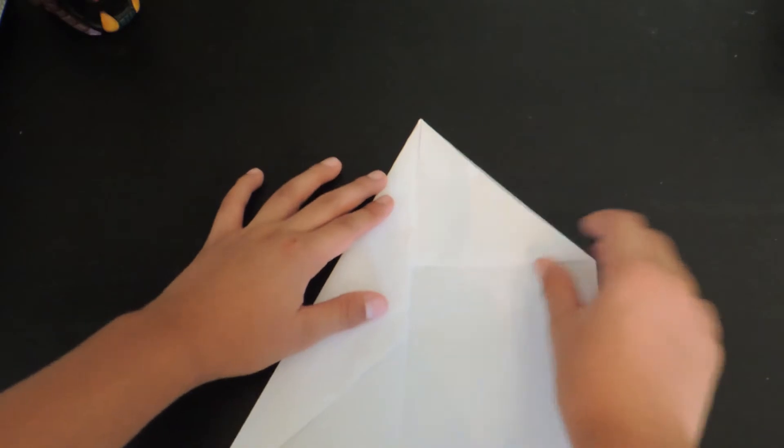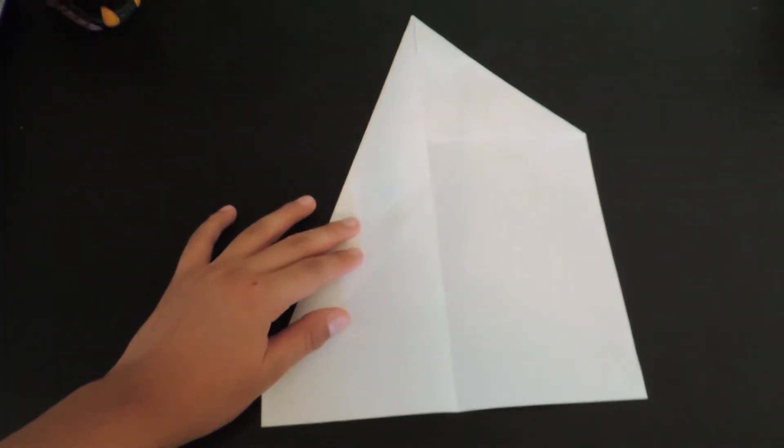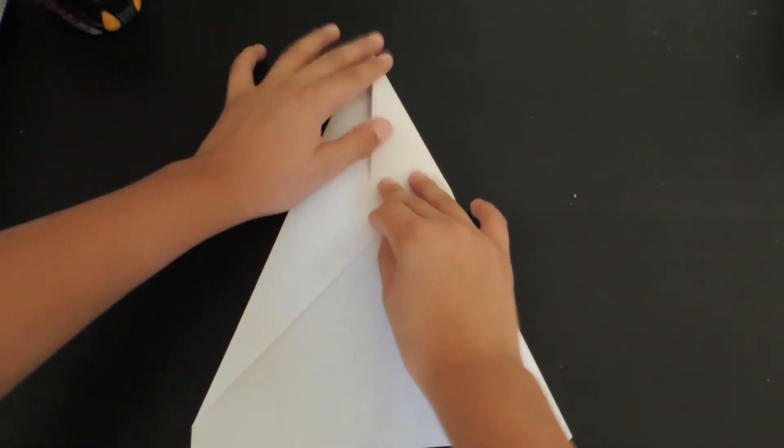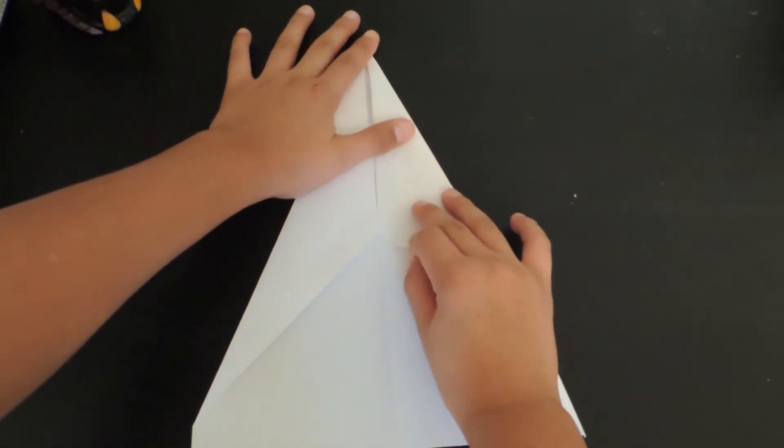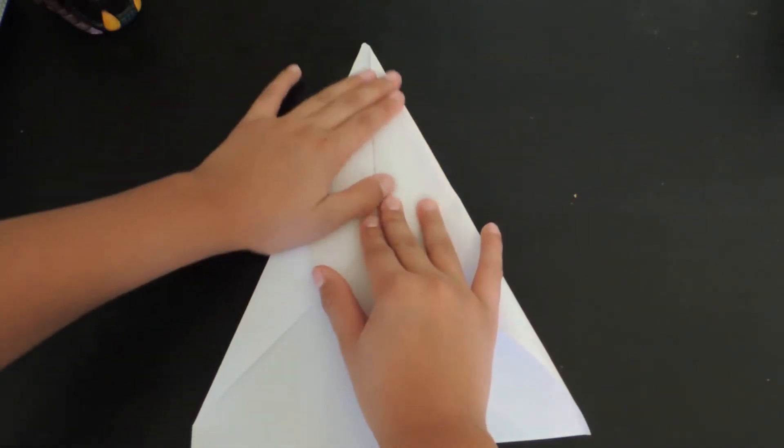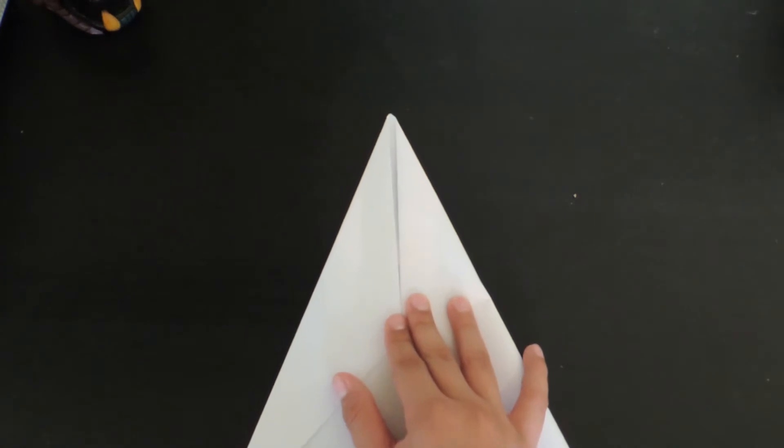And this part you probably have to like kind of get these two corners right here together with this other side. So there, fold that again on this side. So try to get these two corners right here together. And I'll show you why in a minute. It's okay if your paper comes out like this.